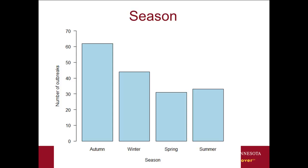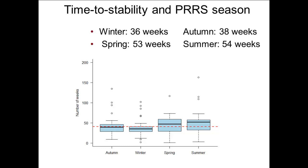For these six participants, outbreaks are distributed across autumn, winter, spring, and summer, with around 30-something outbreaks occurring during summer. When we compare time to stability by season, eyeballing the data shows that time to stability tends to be shorter for outbreaks occurring during autumn and winter compared to those occurring during spring or summer — and it's a pretty large difference.